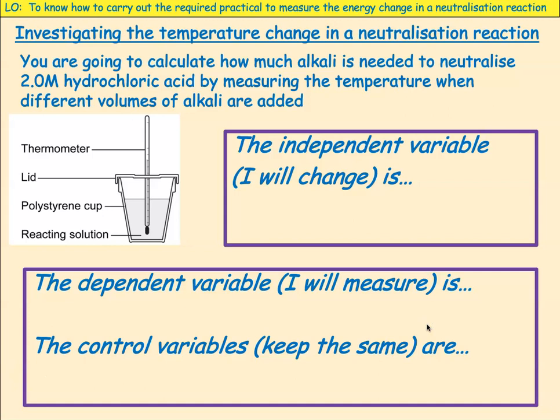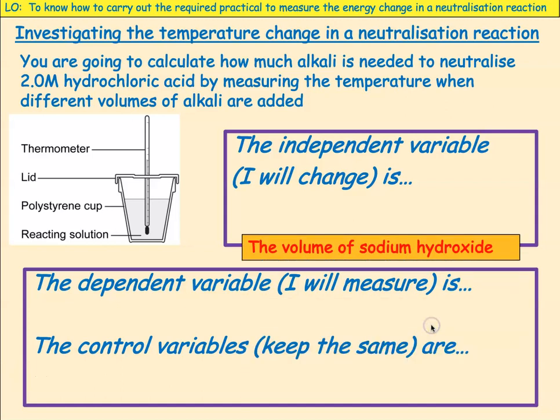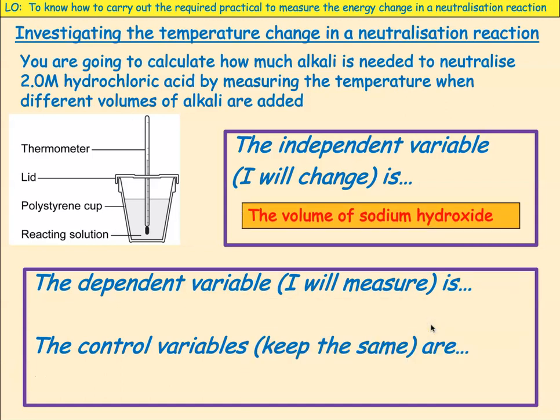You are going to calculate how much alkali is needed to neutralise 2-molar hydrochloric acid by measuring the temperature when different volumes of alkali are added. We're adding different amounts of alkali to a set amount of hydrochloric acid. The independent variable — what we're changing — is the volume of sodium hydroxide.